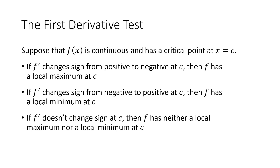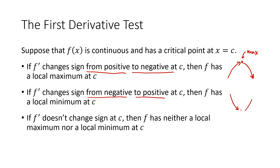So that's exactly what the first derivative test says. It says if you've got a continuous function — no jumps or breaks — and you have a critical point, then if your derivative changes sign from positive to negative, that means my function was going up and then it started going down, so you're going to have a local max. If your sign changes from negative to positive, that means your function was going down and then it started going back up — that's going to be a local min.